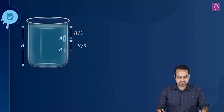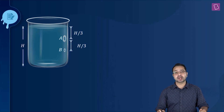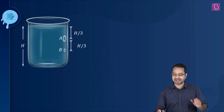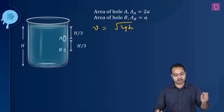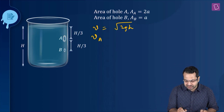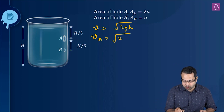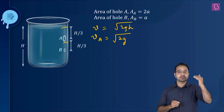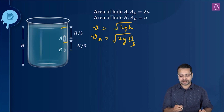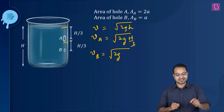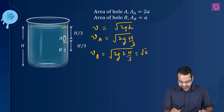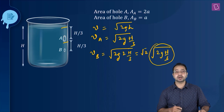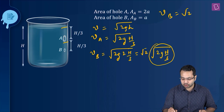It's an open top tank, so the pressure at the hole and pressure at the surface is the same, and the holes are small, so v = √(2gh) can be used. The speed of efflux at hole A is vA = √(2g · h/3). The speed at hole B is vB = √(2g · 2h/3) = √2 × √(2gh/3) = √2 × vA. So vB = √2 times vA.